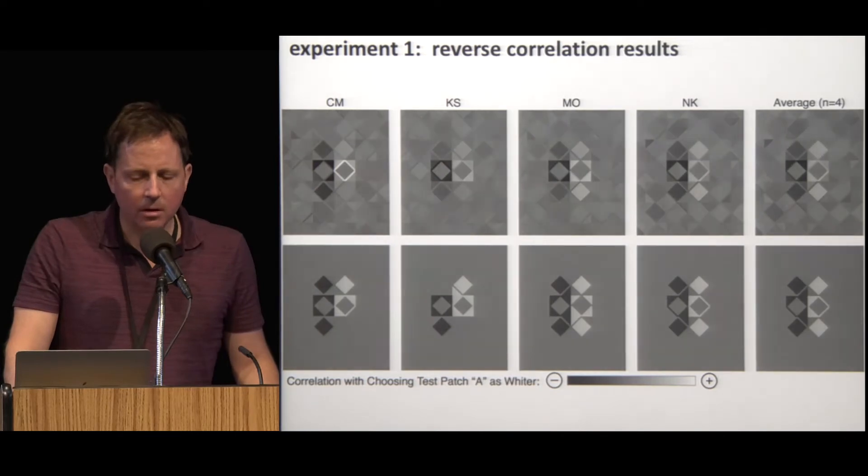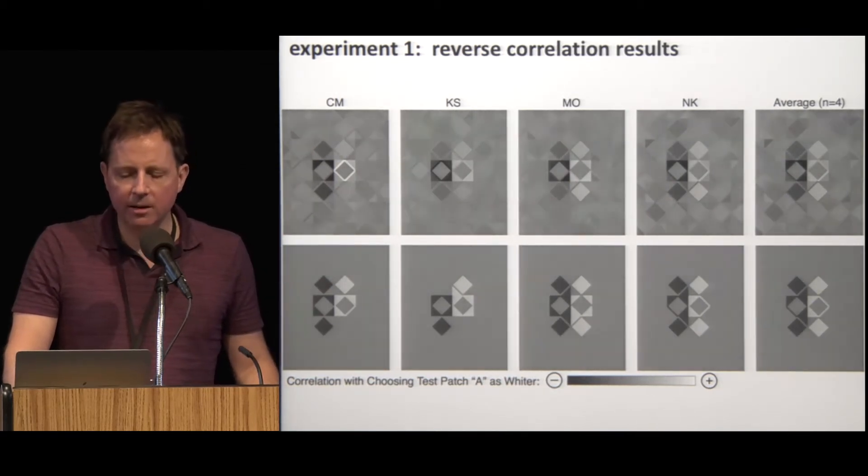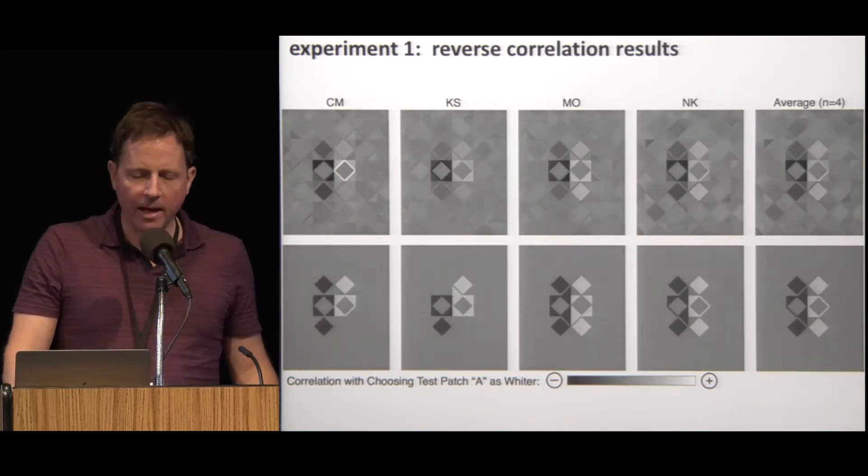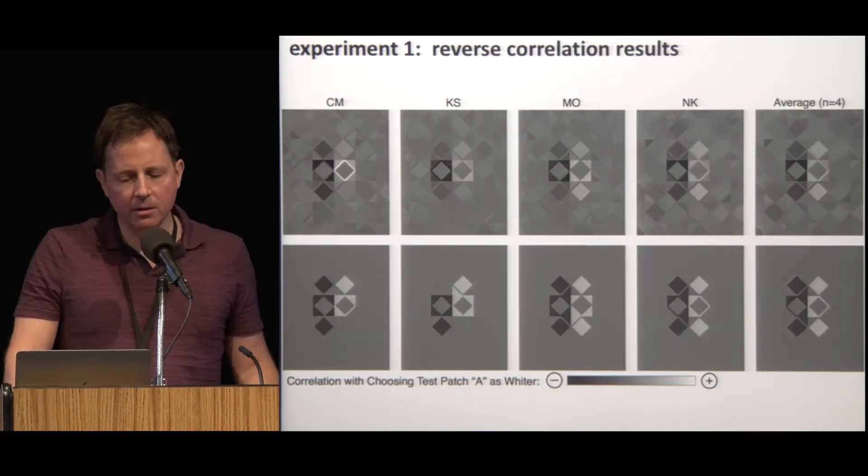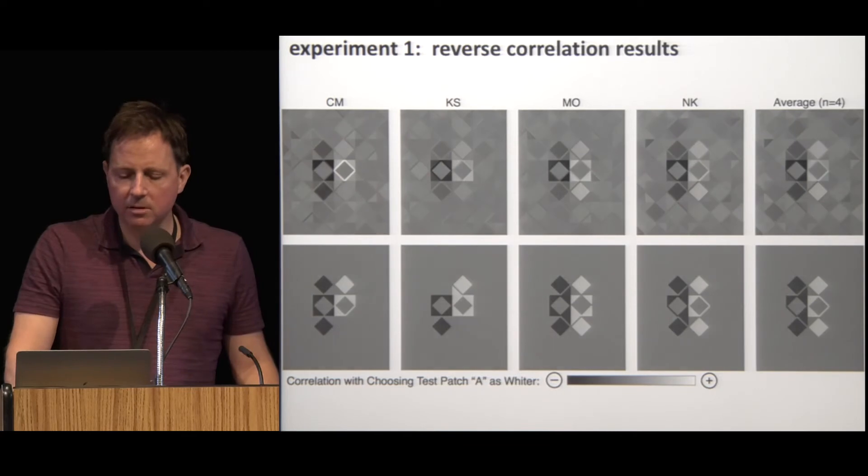Second, the effects are contrast-like. These images show that when bright image patches appear near test diamond A, the observers are less likely to choose A. And when bright patches appear near diamond B, the observer is less likely to choose B. So at least the direction of the effect is the same as in classic simultaneous contrast.